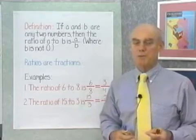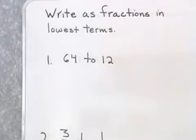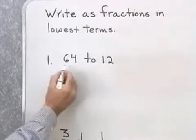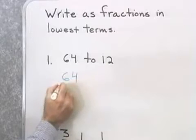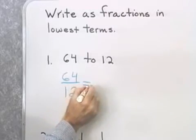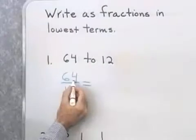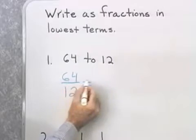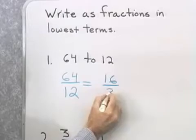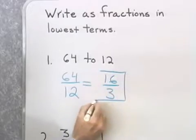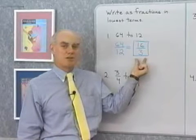Let's go to the board now and try some problems where we take ratios and convert them to fractions. Problem number one: we have 64 to 12, and I want to write this ratio as a fraction in lowest terms. So 64 is in the numerator, 12 is in the denominator. I'll divide the numerator by 4 to get 16, and divide the denominator by 4 to get 3. So the ratio of 64 to 12 is 16 thirds in lowest terms.